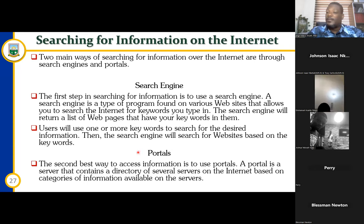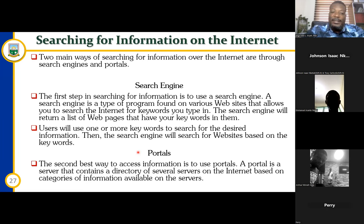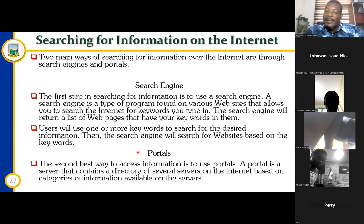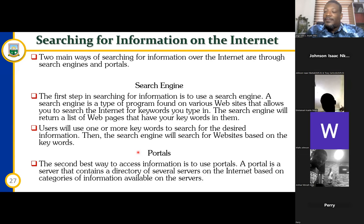If you are looking for information on the internet, there are two main ways. We normally search information through the browser using search engines like Google. We also have portals — a second way to access information. A portal is a server that contains a directory of several servers on the internet, based on the category of information available. The introduction of some of these AIs may find ways to relegate some of these things behind the scene — but of course, it's a work in progress. The difference between browsing and surfing? It's the same thing — if you are surfing the net, it means you are browsing the net.